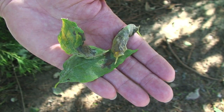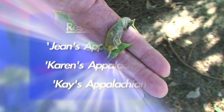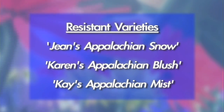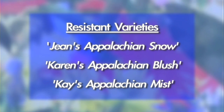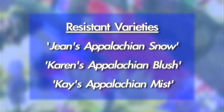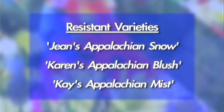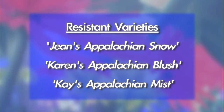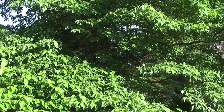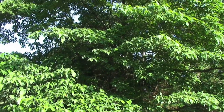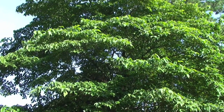To manage this disease, you can rake up and destroy fallen leaves. You should also choose resistant varieties such as Jean's Appalachian Snow, Karen's Appalachian Blush, and Kay's Appalachian Mist. There are also varieties of Cornus coosa that are resistant. We don't recommend homeowners try to spray fungicides on these very large trees, as you don't have the proper equipment and it's difficult to get adequate coverage to manage the disease.